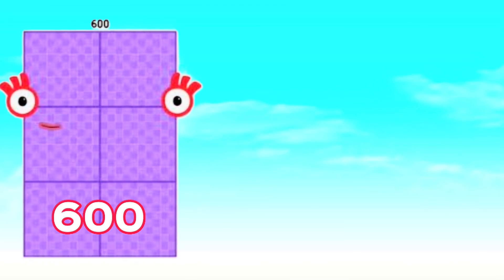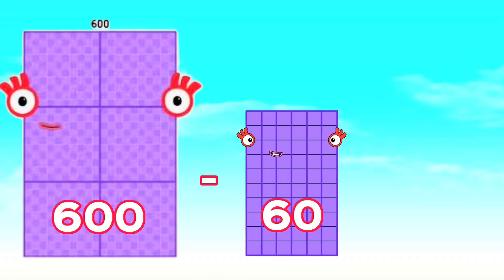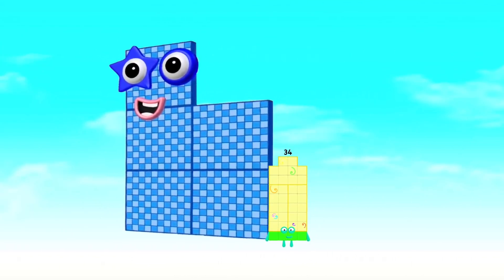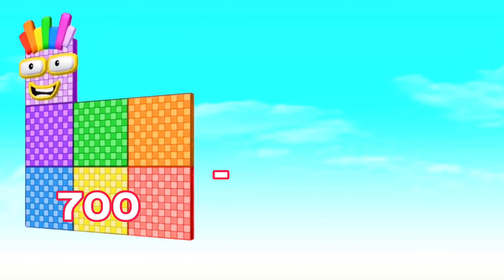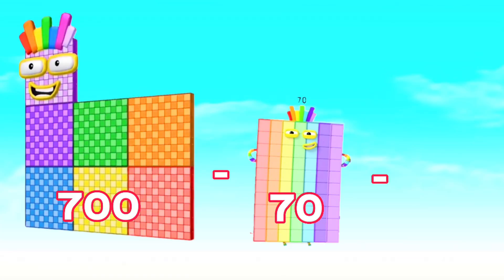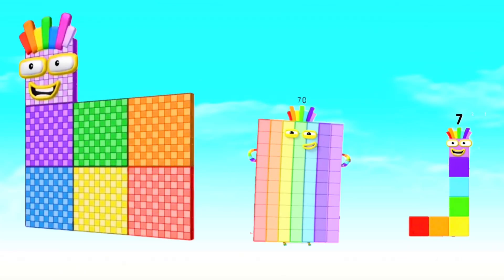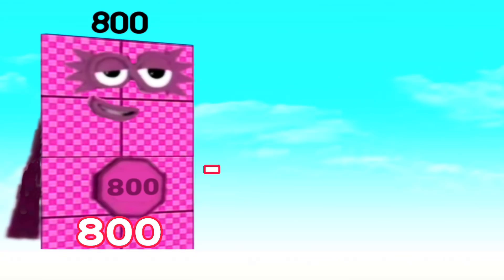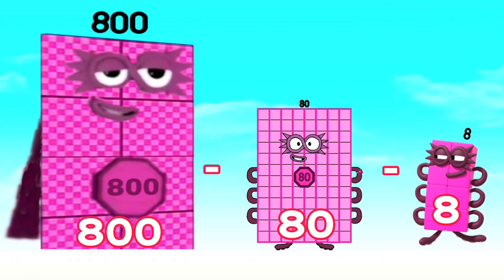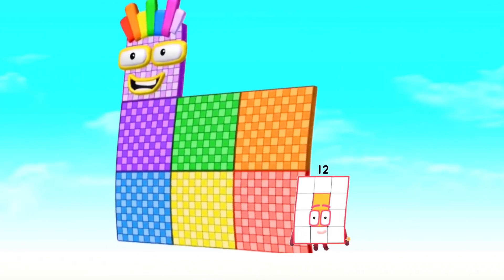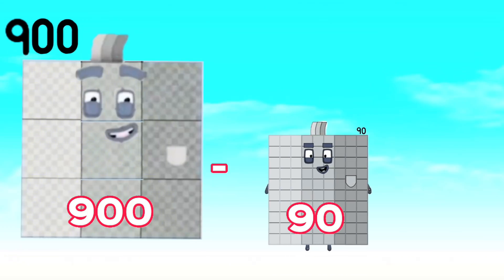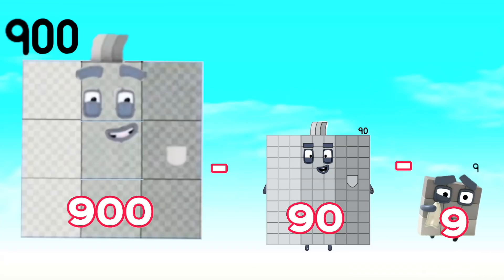Subtraction of Big Numbers Part 2. 600 minus 60 minus 6 equals 534. 700 minus 70 minus 7 equals 623. 800 minus 80 minus 8 equals 712. 900 minus 90 minus 9 equals...